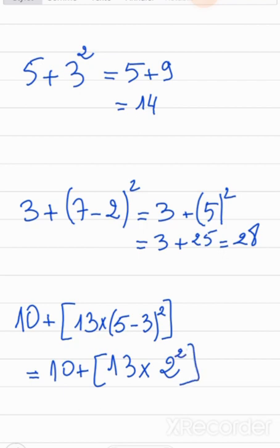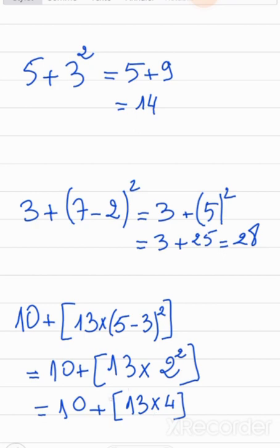Now inside the square brackets: 10 plus 13 times 2 squared, which is 4. Now within the brackets I have a multiplication: 13 times 4 is 52. And 10 plus 52 is 62.